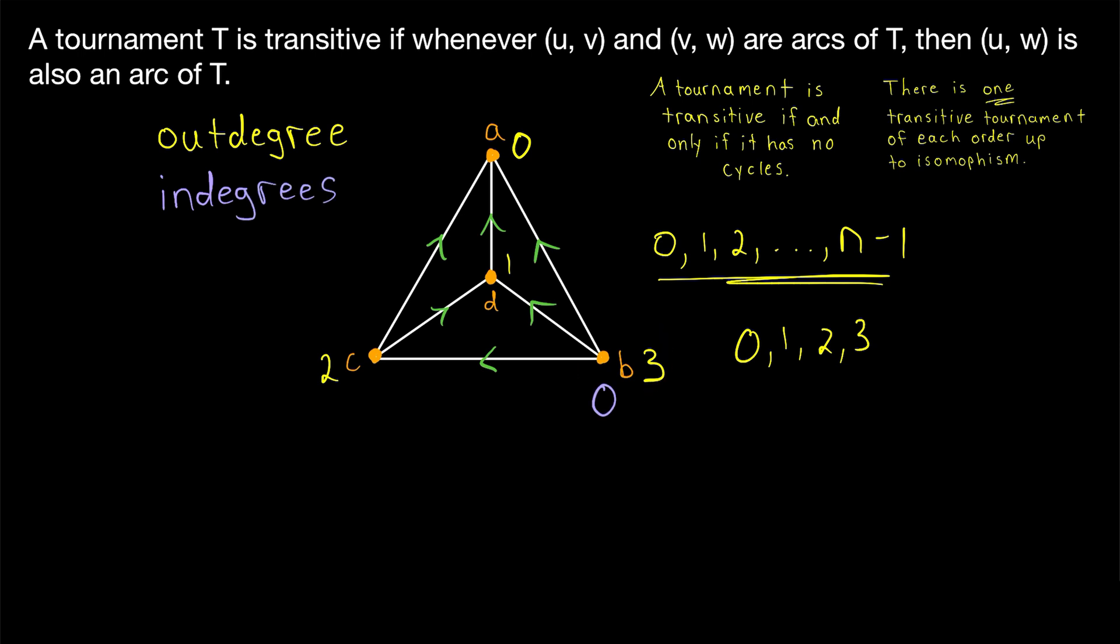And we could say the same thing about in-degrees if we wanted to focus on those. The in-degree of B is 0, the in-degree of C is 1, the in-degree of D is 2, and the in-degree of A is 3. Since it has four vertices and there's exactly one arc between each pair of vertices, the in-degree and out-degree of each vertex will add to 3. So that's another exercise. You can try to prove that in a transitive tournament, every vertex has a different out-degree, or a different in-degree if you prefer.